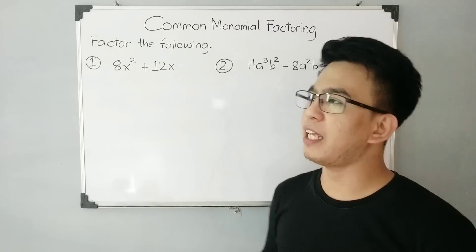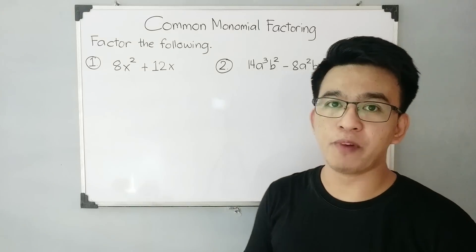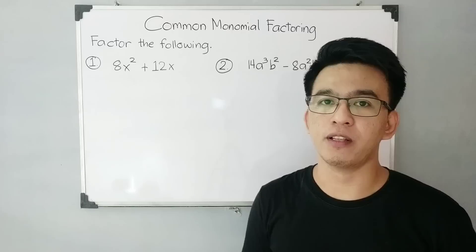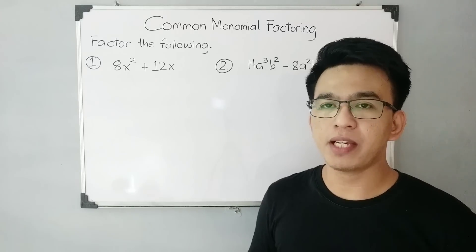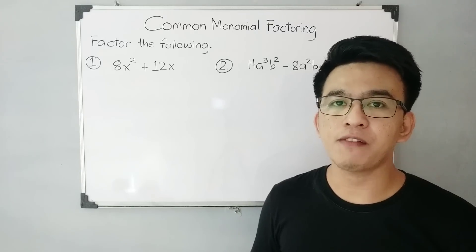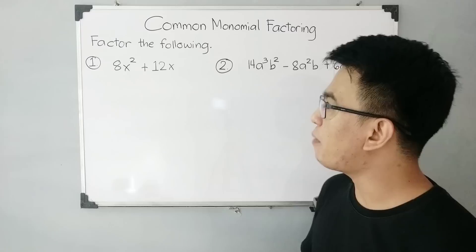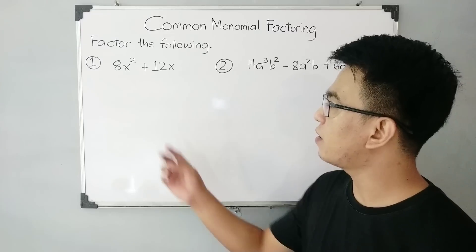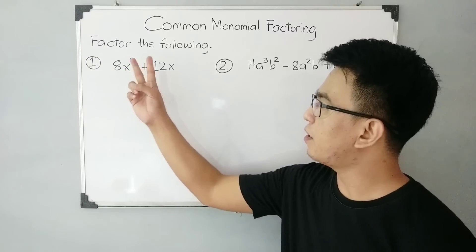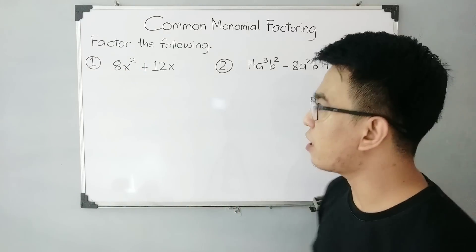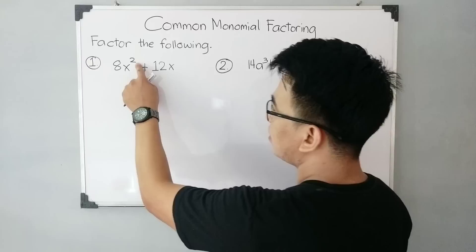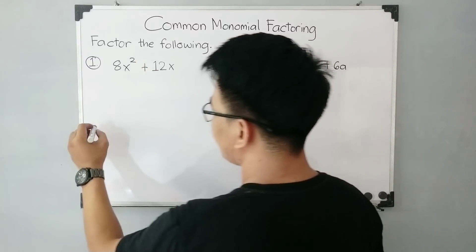The key here is prime factorization. Because we need to find first the greatest common factor of these two terms. So let's start with 8x squared.